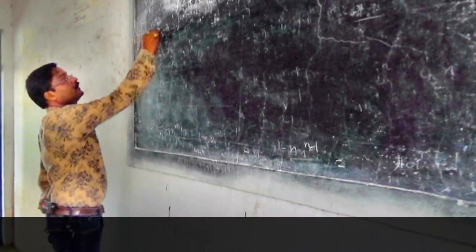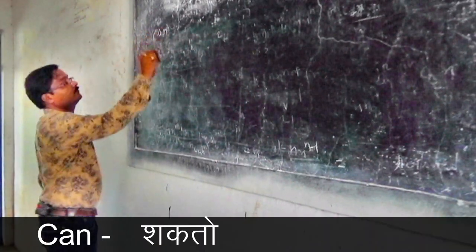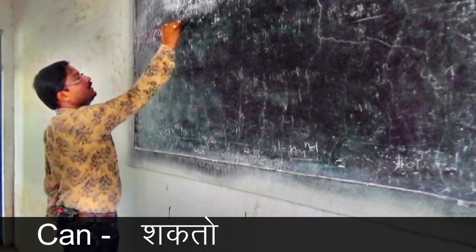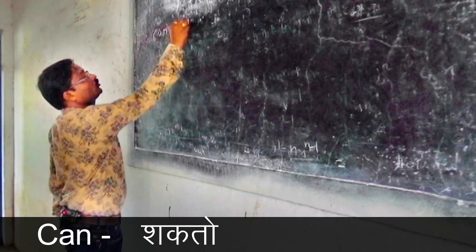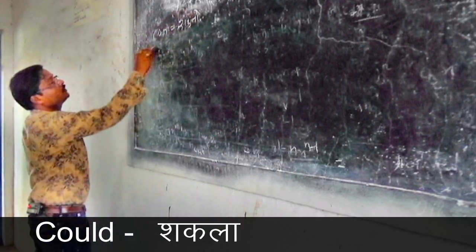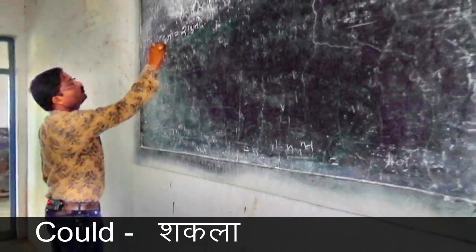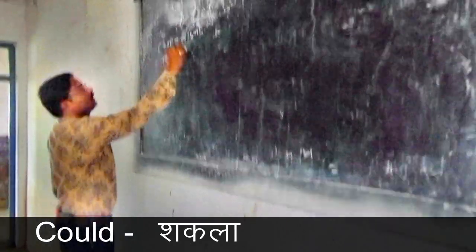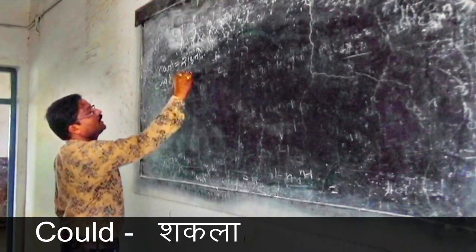See, it is 'can'. In Marathi, can means 'shakto'. It is 'could'. In Marathi, could means 'shakla'.